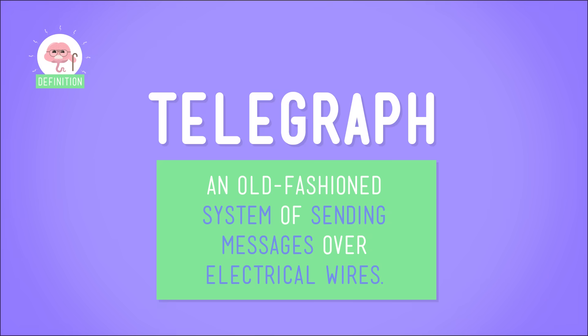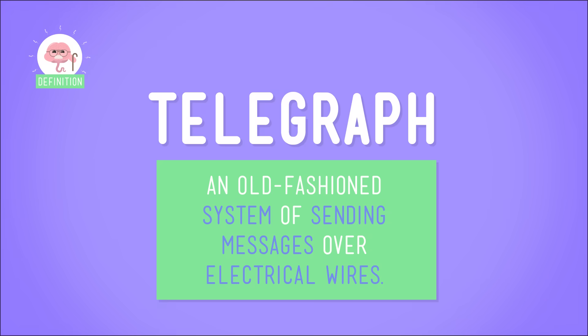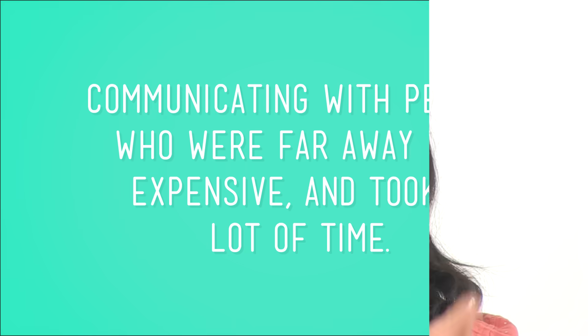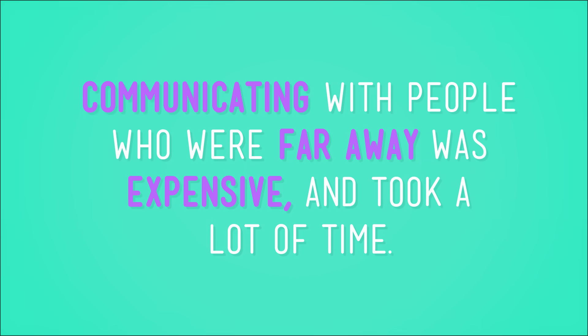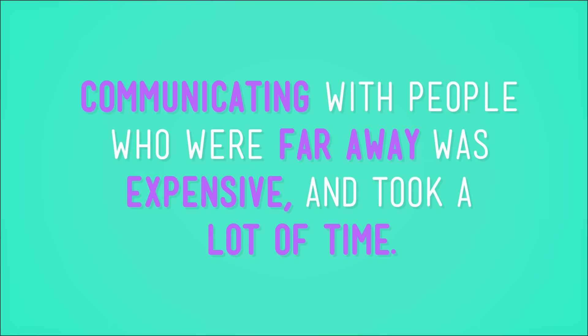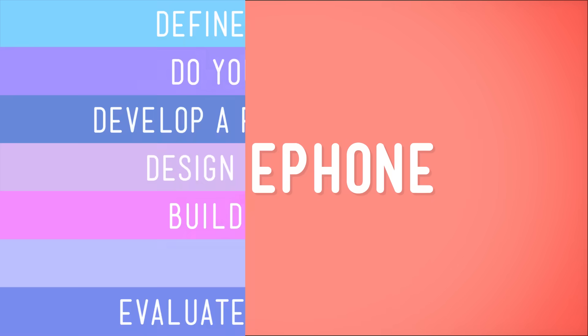Back then, the best you could do was a telegraph, which was an old-fashioned system of sending messages over electrical wires. Bell identified his problem: communicating with people who were far away was expensive and took a lot of time. So his invention, or solution to this problem, was something you may have heard of — the telephone.